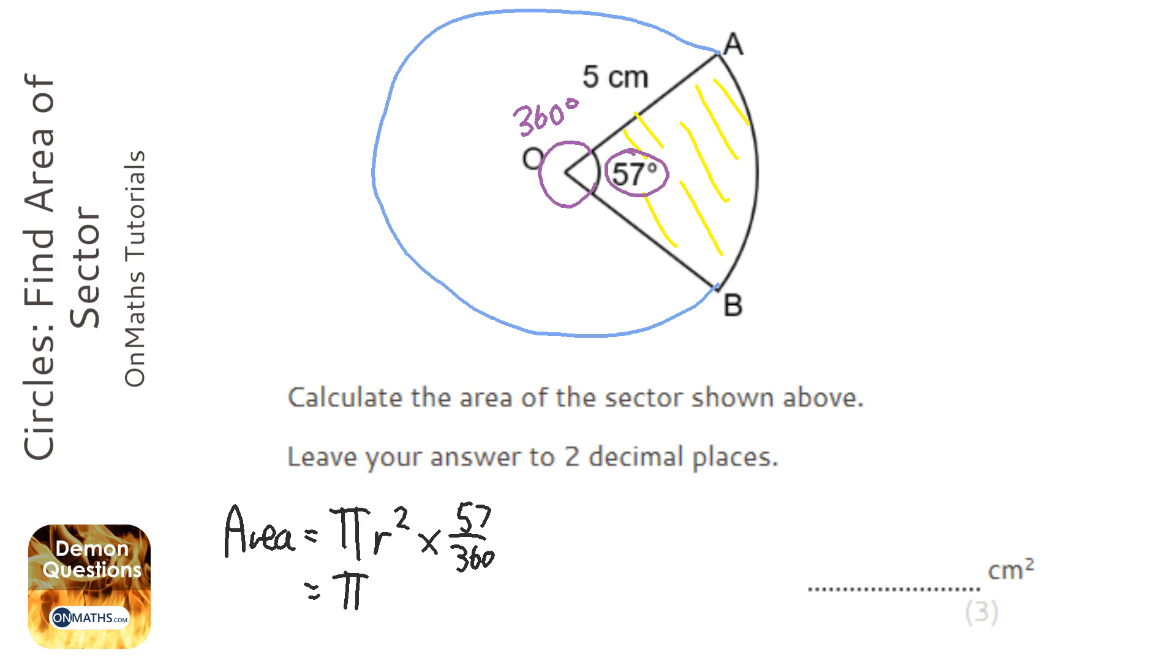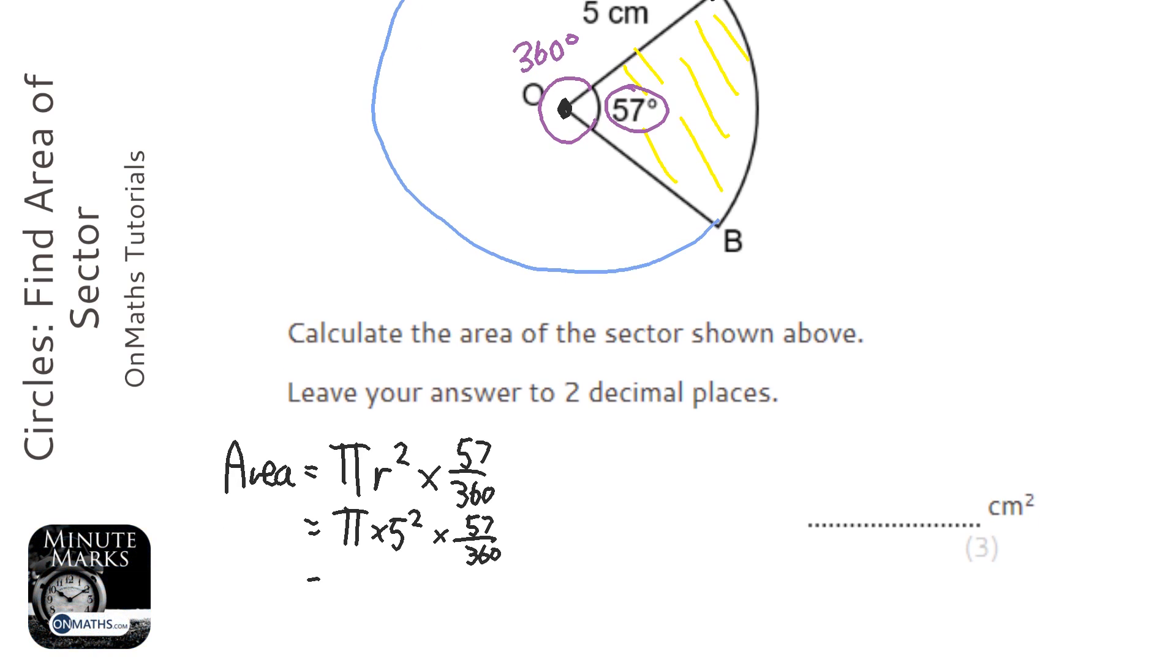The radius is given to us, which is the distance from the outside of the circle to the center of the circle, which is 5 centimeters. So I'll put that in, and all you need to do now is type it into the calculator.